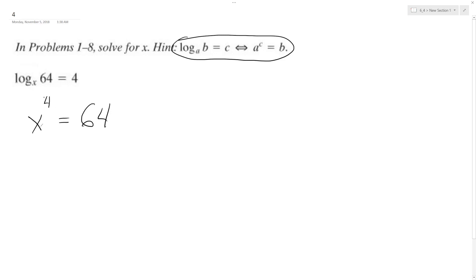So what we can do here as a hint is we want to get 64 into a form where it's the same thing raised to the 4th. So we can play around here a little bit.